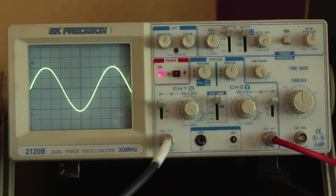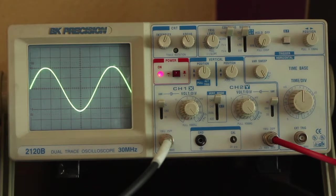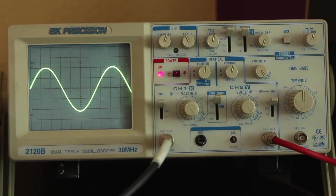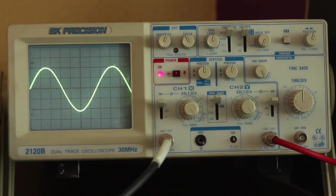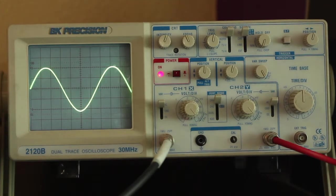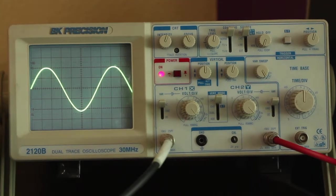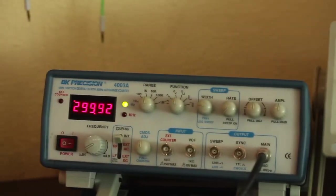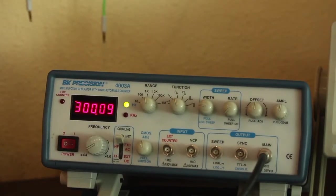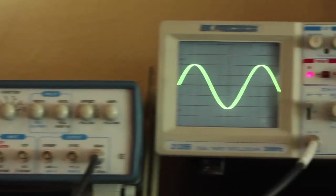So again, the oscilloscope is not a precision tool, at least this model. There are some better versions out there in the world. But we can get a rough sense of what frequency we're looking at here based on how many graticules it's taking up. So if I look at my oscillator, we're right around 300 hertz, 300 cycles per second.